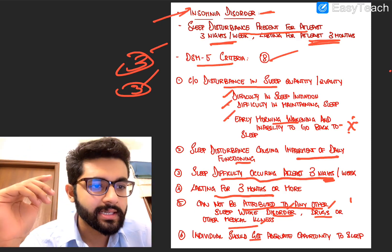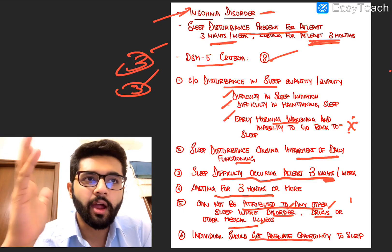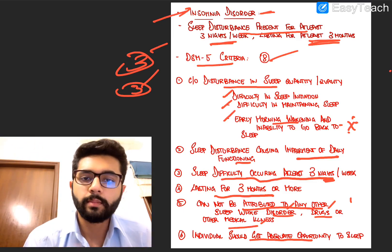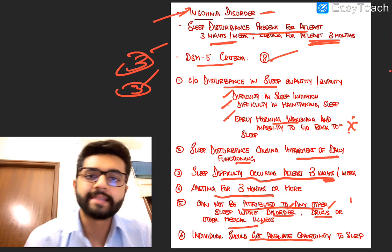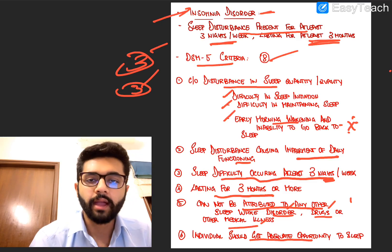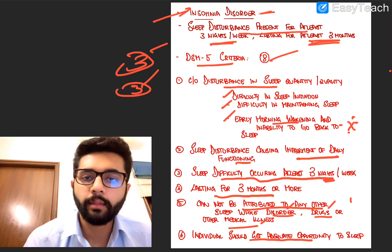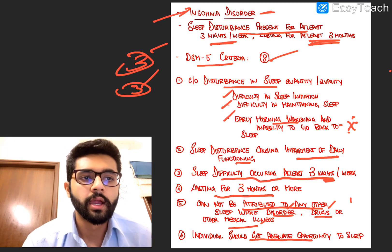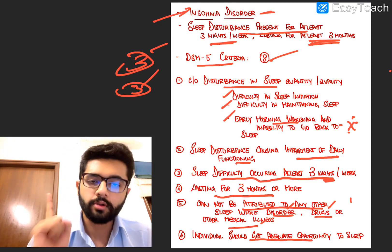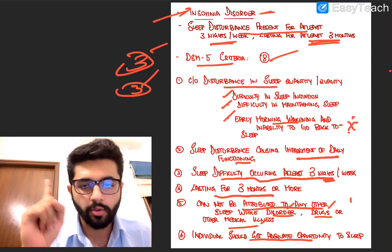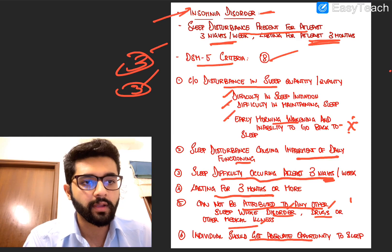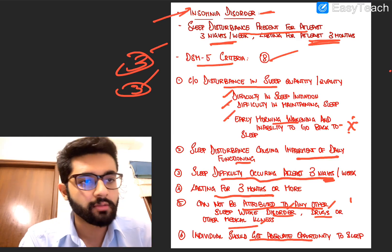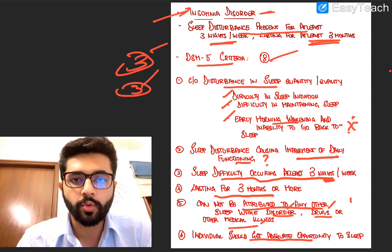Lastly, the individual should get adequate opportunity to sleep. For example, an intern or an MB student who doesn't get adequate opportunity to sleep and says they have insomnia — that's not actually insomnia, they simply haven't had the opportunity to sleep. Adequate opportunity to sleep is an important point in the DSM-5 criteria, as is impairment of daily function.